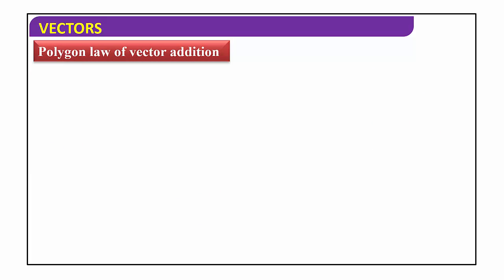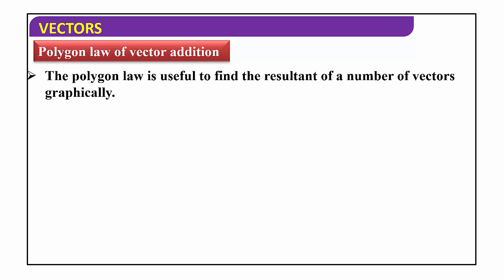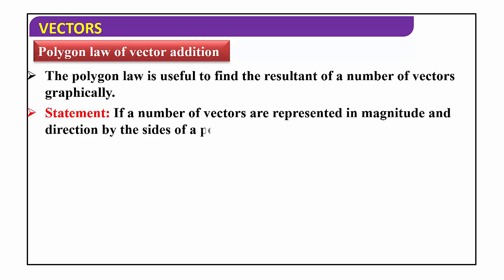Now we can study about polygon law of vector addition. The polygon law is useful to find the resultant of a number of vectors graphically. If there are two vectors we can use triangle law, but if there are more than two vectors — n number of vectors — then graphically we can find their resultant using polygon law of vector addition.